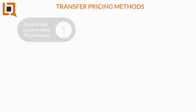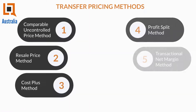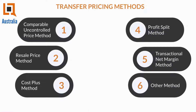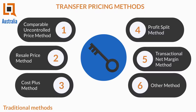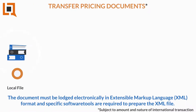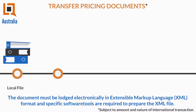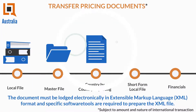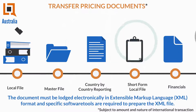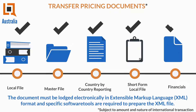Tax authorities have prescribed six methods to be used by companies to show that a transaction is at arm's length price. Generally, companies entering into related party transactions are required by the authorities to prepare different types of transfer pricing documents.